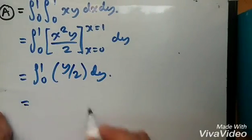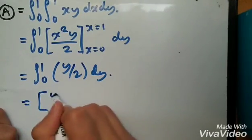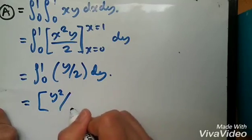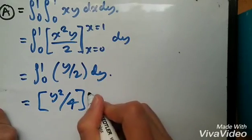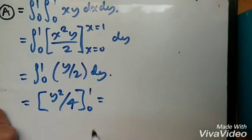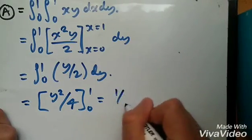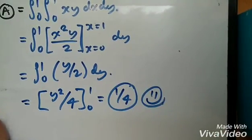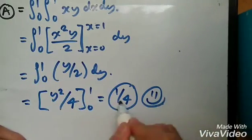We're going to have y² over 2 times 2, which is 4. Again, from 0 to 1. And replacing the value, we're going to get a quarter. Okay, good. So this is the solution for A.